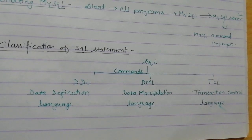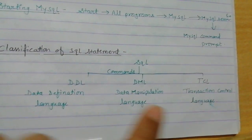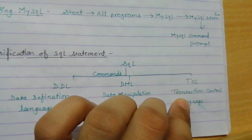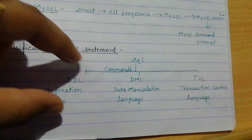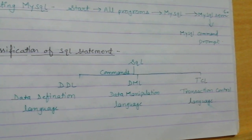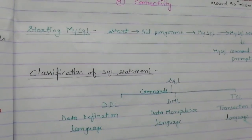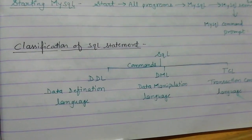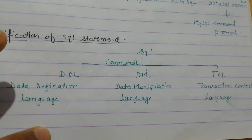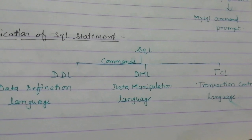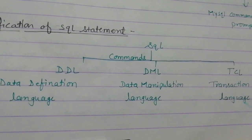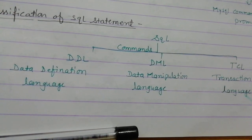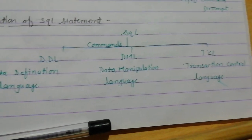Basically, SQL commands are classified into three types: DDL, DML, and TCL. DDL consists of Data Definition Language. DML consists of Data Manipulation Language, and TCL consists of Transaction Control Language. These are three different language command categories. Within each category, there are five to six commands or queries that perform one group of operations.